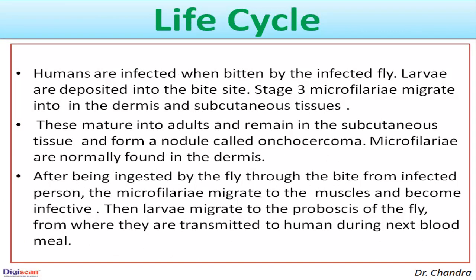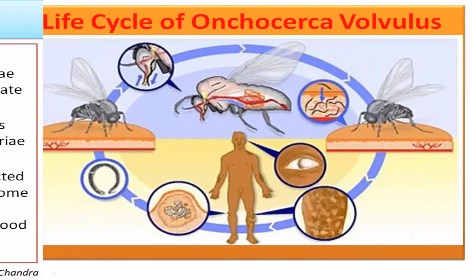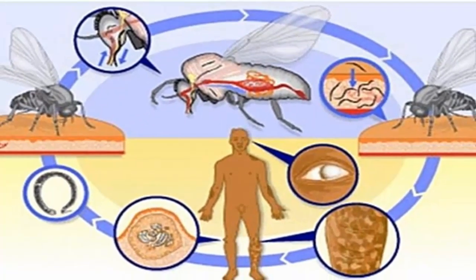Regarding the life cycle of the parasite: humans are infected when bitten by the infected fly. Larvae are deposited into the bite site. Stage 3 microfilariae migrate into the dermis and subcutaneous tissue, where they mature into adults and form a nodule called an onchocercoma. Microfilariae are normally found in the dermis. After being ingested by the fly through a bite from an infected person, the microfilariae migrate to the muscles of the fly and become infective. Larvae then migrate to the proboscis of the fly and are transmitted to humans during the next blood meal. Here is the diagrammatic presentation of the life cycle.